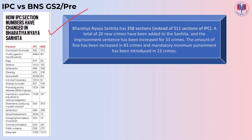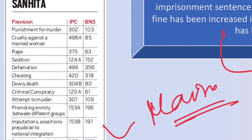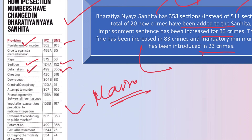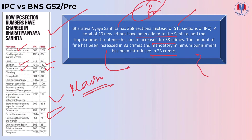The Bharatiya Nagarik Suraksha Sanhita has 358 sections compared to IPC's 511. A total of 20 new crimes have been added, imprisonment sentences increased for 33 crimes, financial penalties increased for 83 crimes, and mandatory minimum punishment introduced for 23 crimes. Key comparisons: Sedition — IPC Section 124A, BNS Section 152; Defamation — IPC Section 499, BNS Section 356; Sexual Harassment — BNS Section 75.